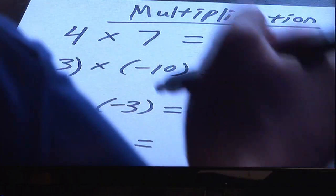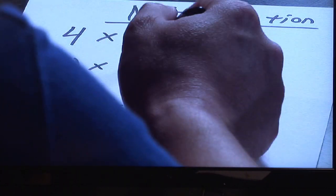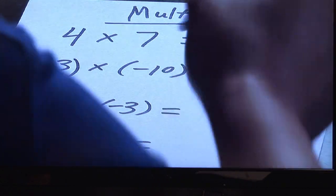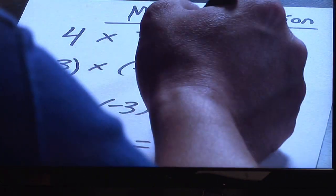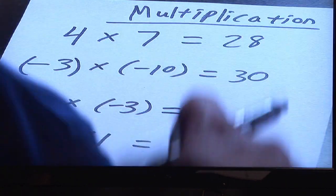So negative three times negative ten, negative times a negative is going to give you a positive, so you just have to figure out what three times ten is going to be, which is going to be thirty.